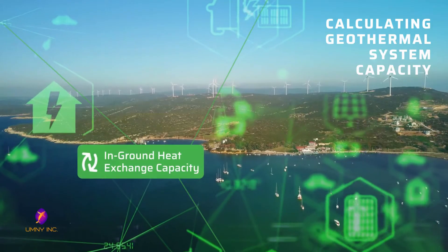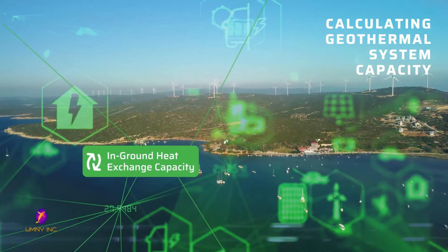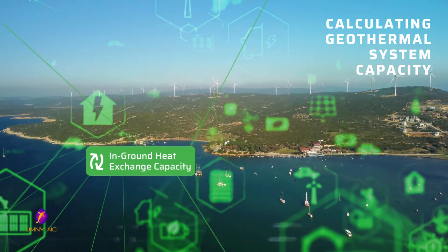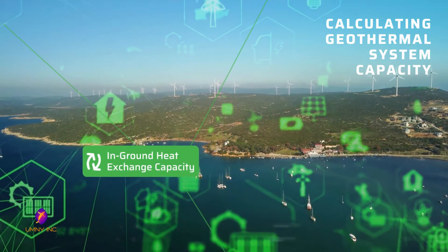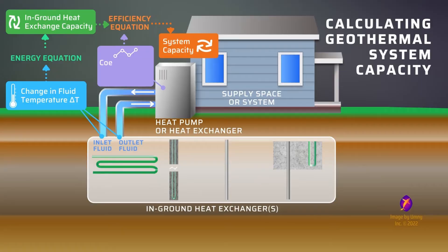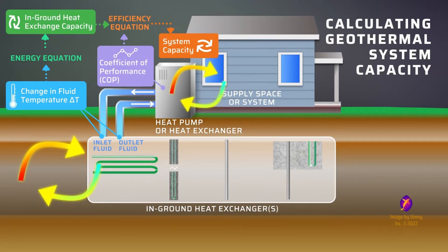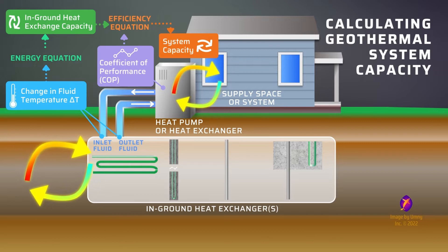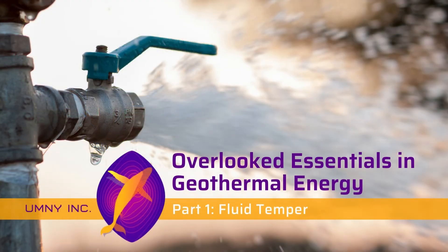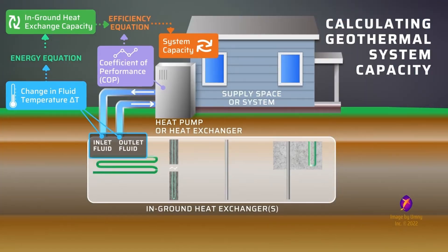The energy amount supplied by this equation allows us to directly compare our ground-based system with any other energy system to determine relative profitability and efficiency. We can then use the efficiency equation and the coefficient of performance of the heat pump, or efficiency of the heat exchanger, to calculate exactly how much of the energy from the ground is being transferred to the supply space. In this part 1 of our series on overlooked essentials in geothermal energy, we're focusing on the change in fluid temperature that occurs at the inlet and outlet to the in-ground heat exchangers.